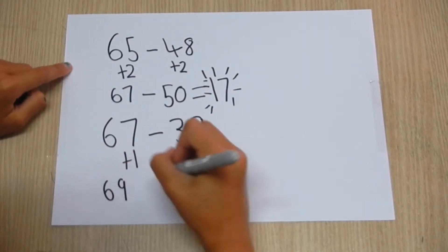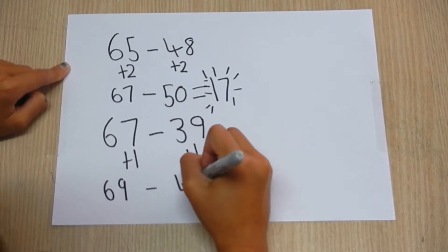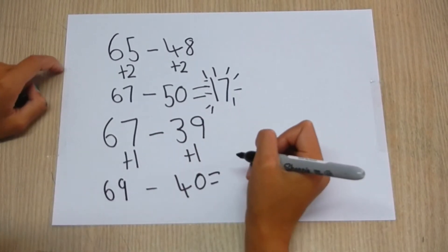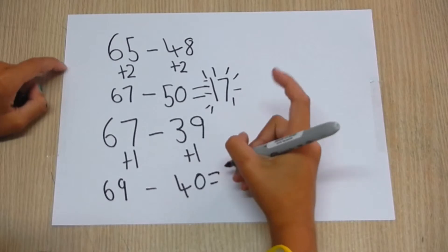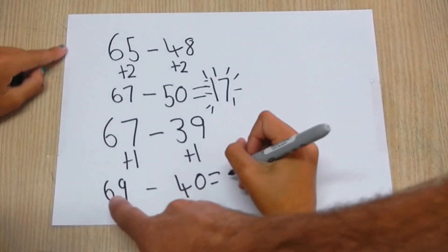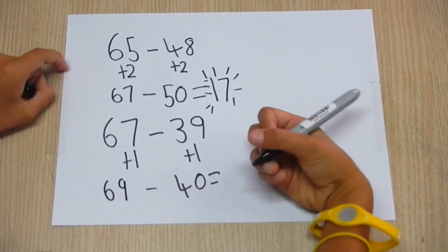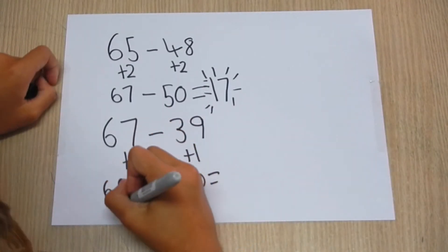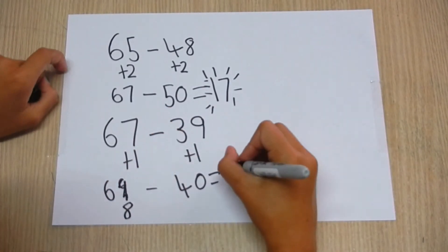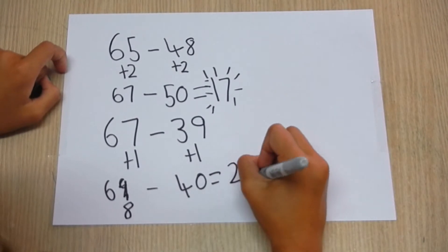Then take away, 68 take away 40, and the answer is 28.